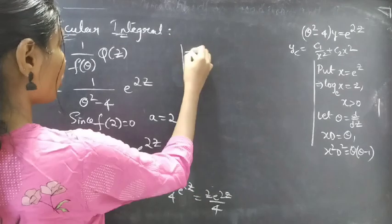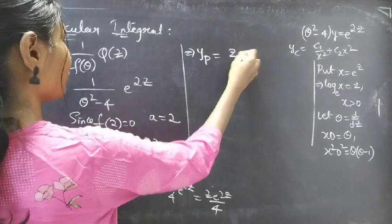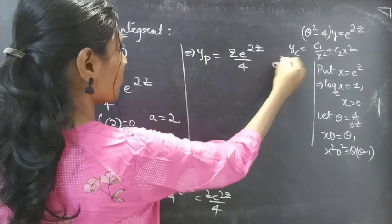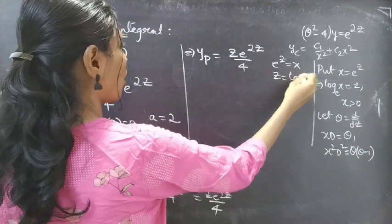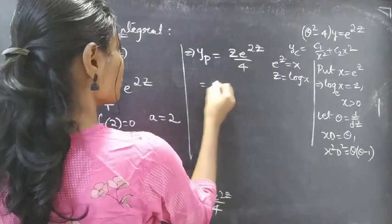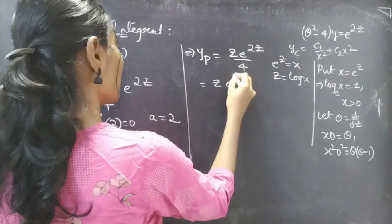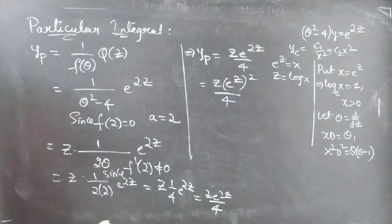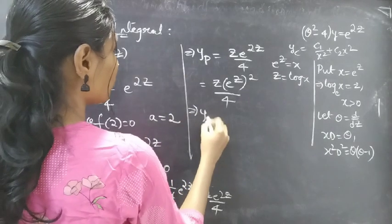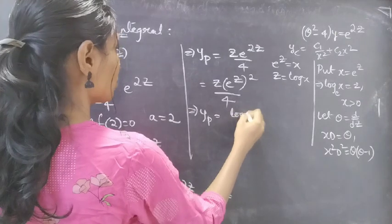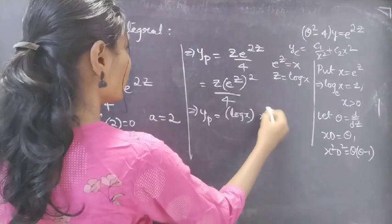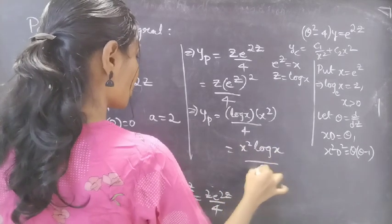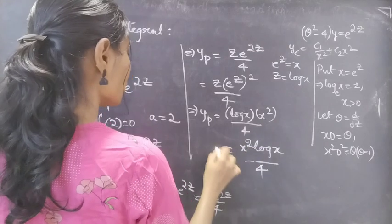We got yp in terms of z: yp equals z e to the power 2z by 4. We need to write this in terms of x, replacing e to the power z by x and z by log x. Writing e to the power 2z as (e^z)^2 and substituting, yp equals log x times x squared divided by 4, which equals x squared log x by 4.